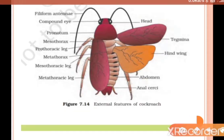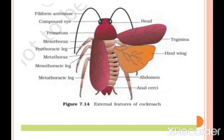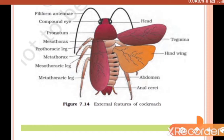The thorax is divided into three parts: prothorax, mesothorax, and metathorax. Three pairs of walking legs are present, as you can see in the external features of the cockroach.